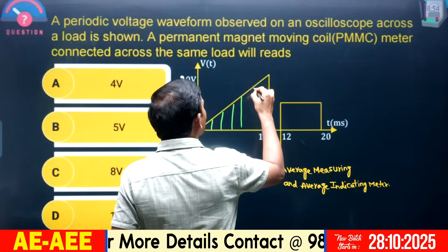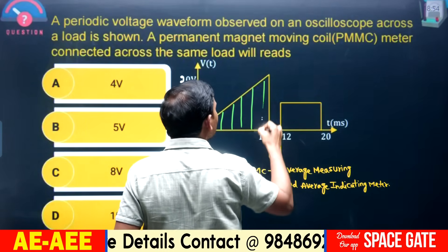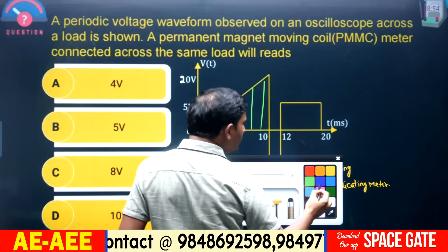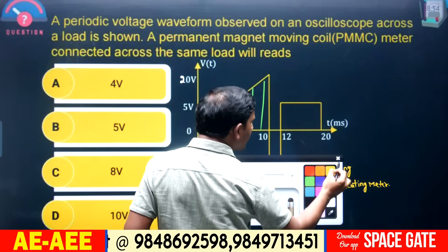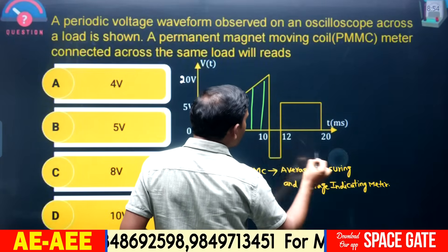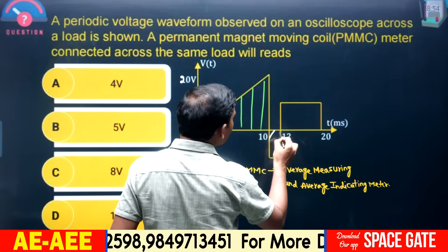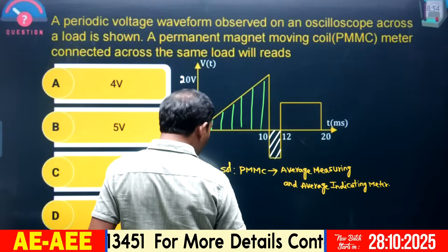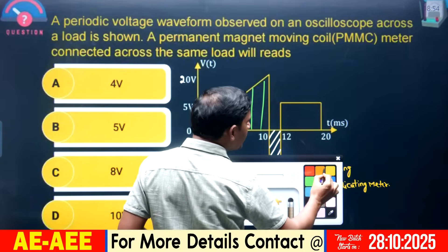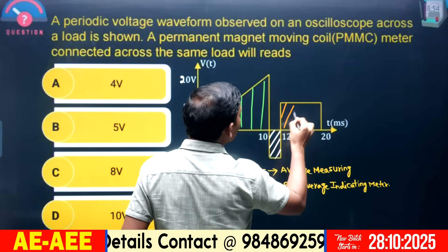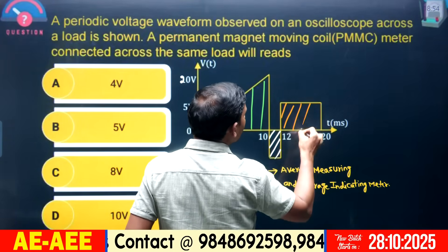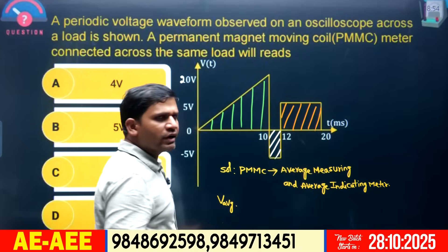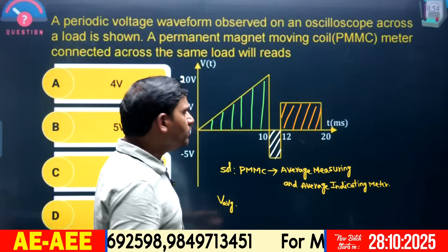This shape is a triangle. Find the area under the triangle, and this is a rectangle — find the area under this rectangle as well. This is also a rectangle; find the area under this rectangle too. Then add all these areas to get the average value.